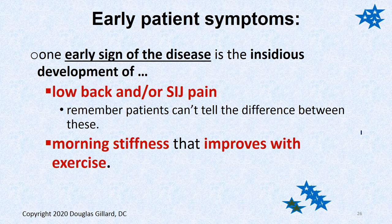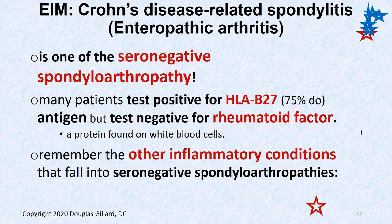Early symptoms of axial EIM include morning back stiffness that gets better as the day progresses, improves with exercise and stretching, but worsens progressively until the patient becomes disabled as the spinal joints are destroyed. Crohn's disease-related spondylitis — i.e., enteropathic arthritis — is one of the seronegative spondyloarthropathies. Blood work usually shows a positive HLA-B27 antigen and a negative rheumatoid factor.